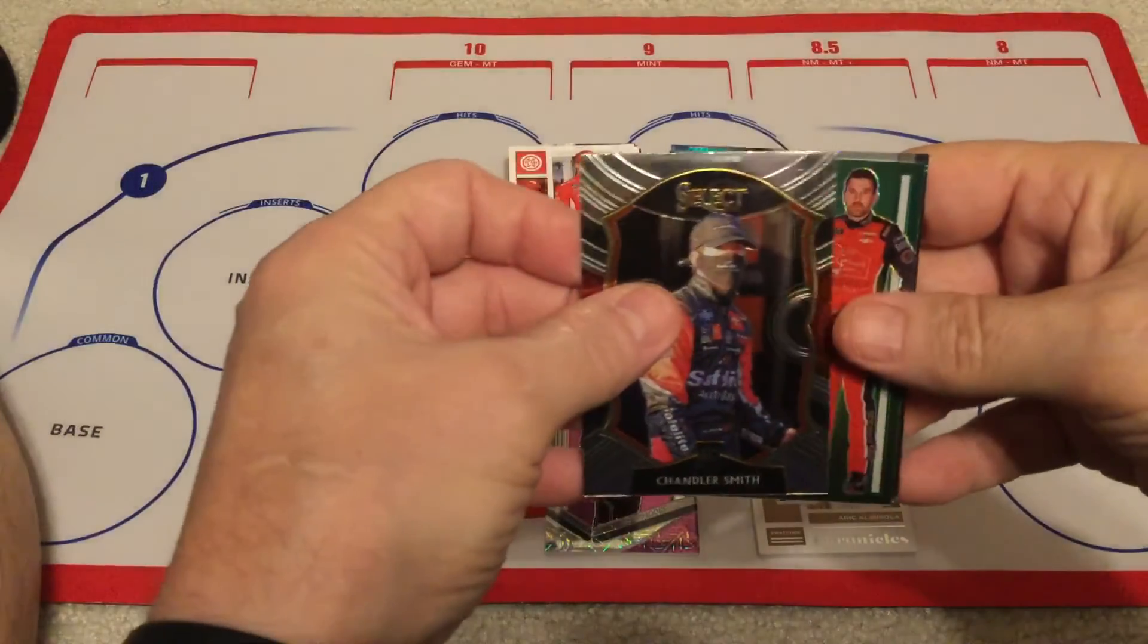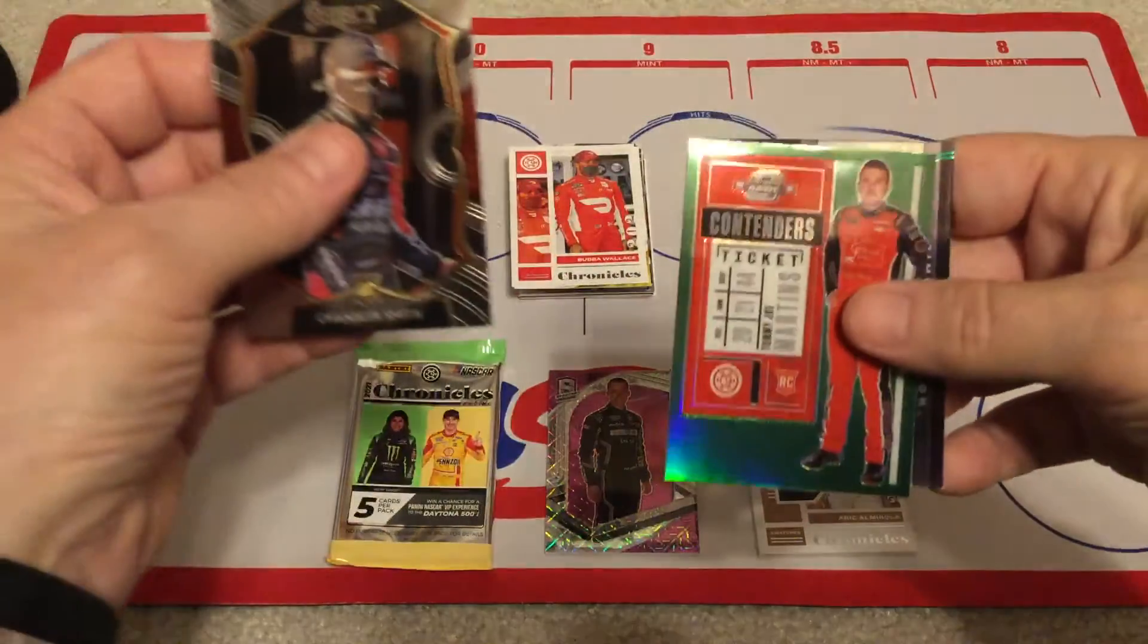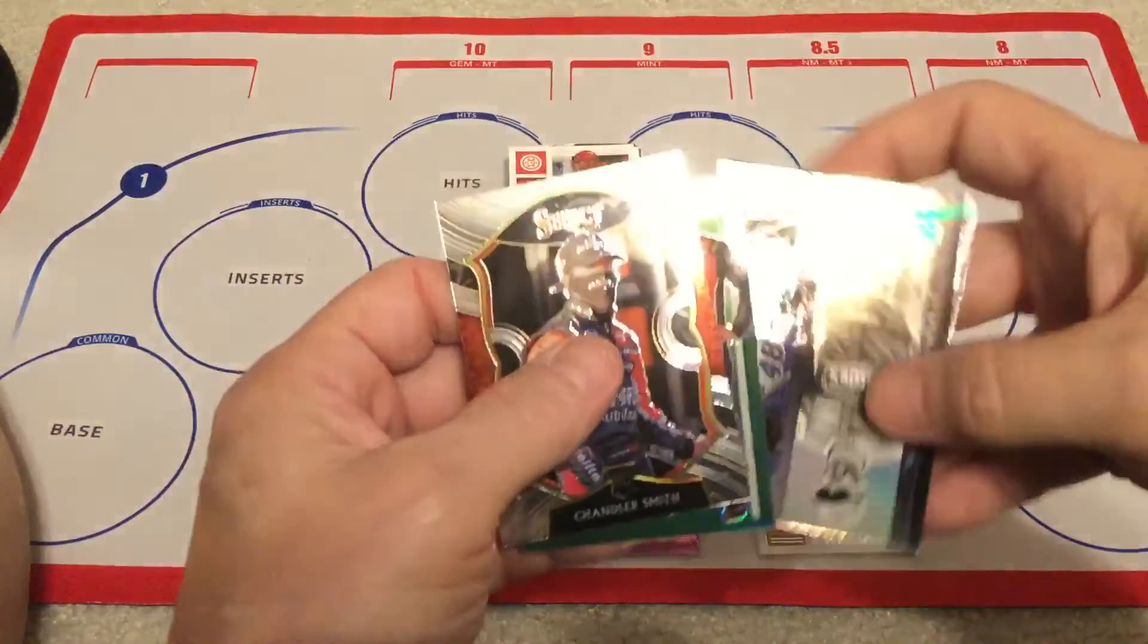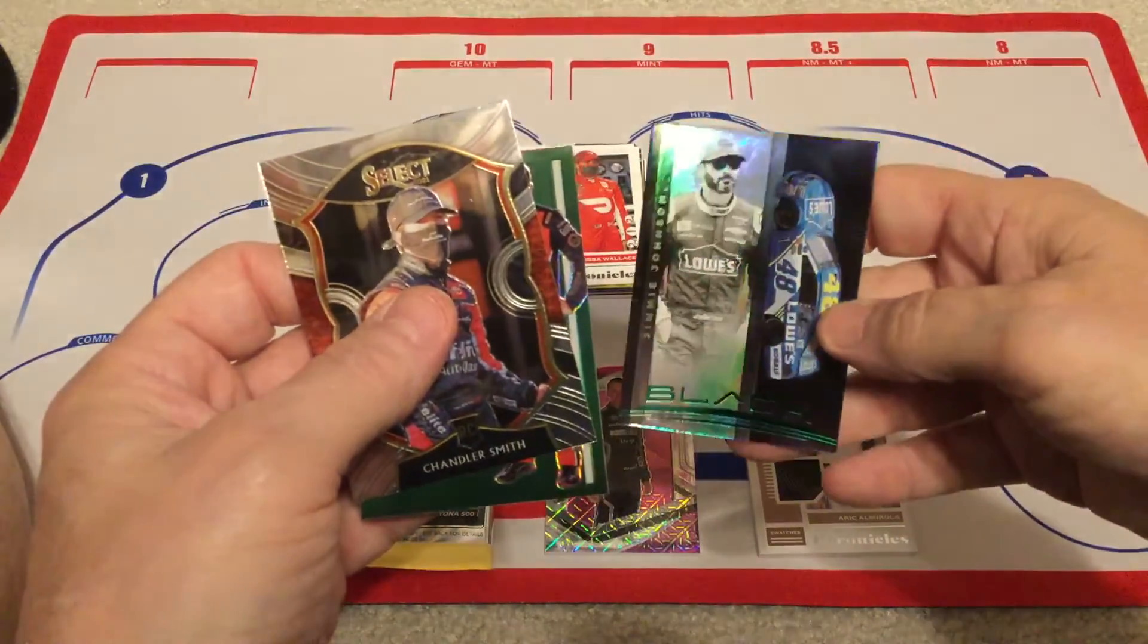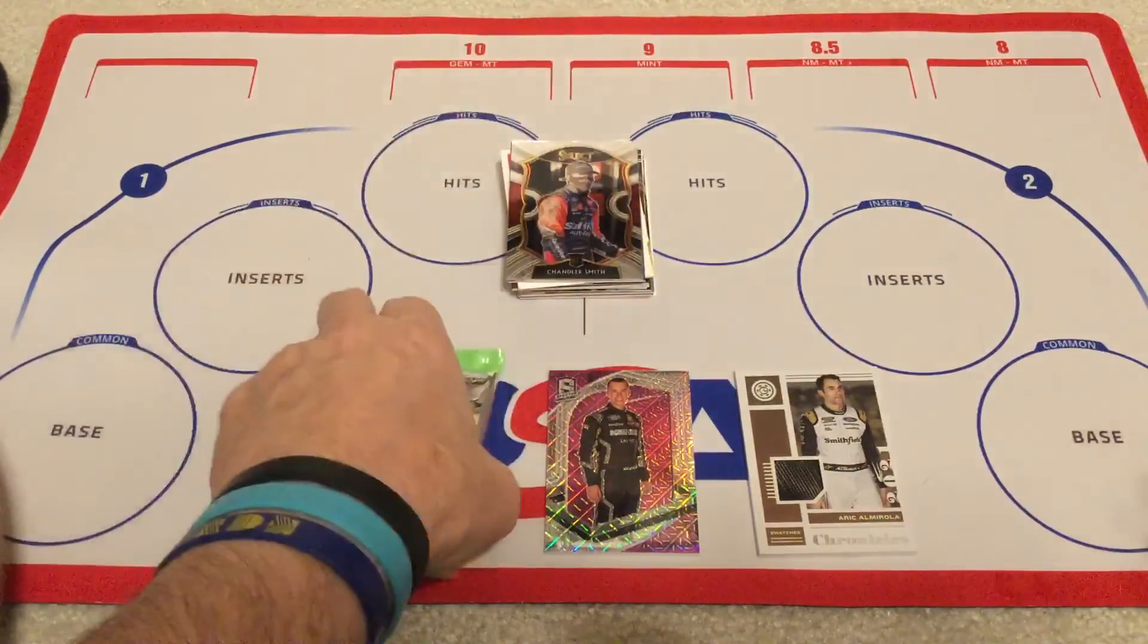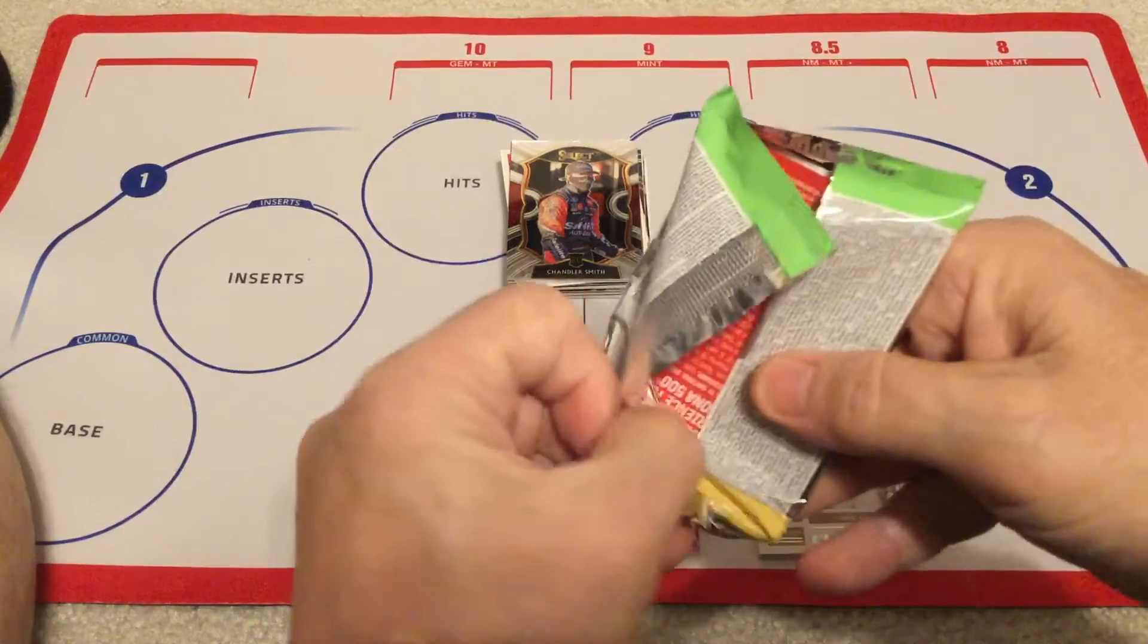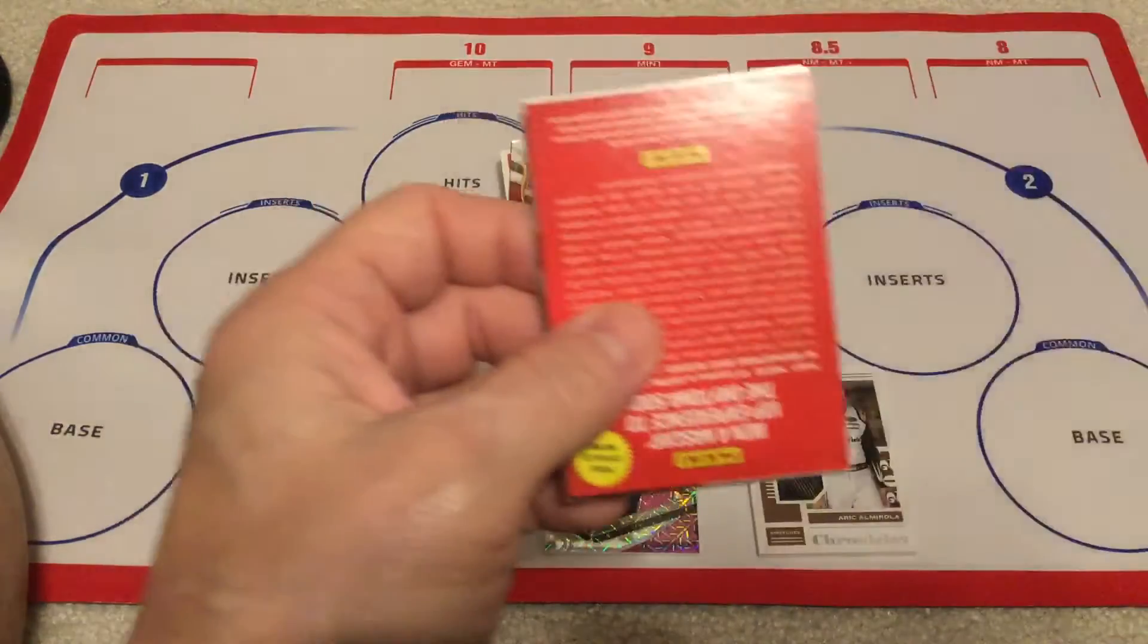There's Chandler Smith, he's doing very well in trucks this year. And here's a green Contenders of Tommy Joe Martins, not Martin but Martins. And then there's a green black of Jimmie. So not too bad, we'll take it. It all goes towards making my sets anyway. So hopefully I can get close to these sets. Now I know I was close before, but with these maybe I can get over the hump.